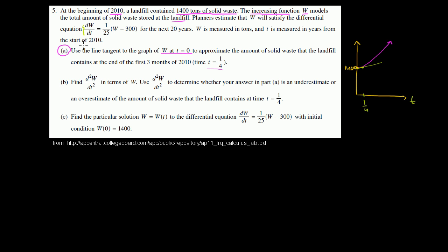We could actually rewrite this differential equation using slightly different notation. This is the derivative of w with respect to t. We could write that as w prime of t equals 1 over 25 times the function w, which is a function of t, minus 300. And when you look at it this way, it becomes clearer how to figure out what the derivative of w is at 0.